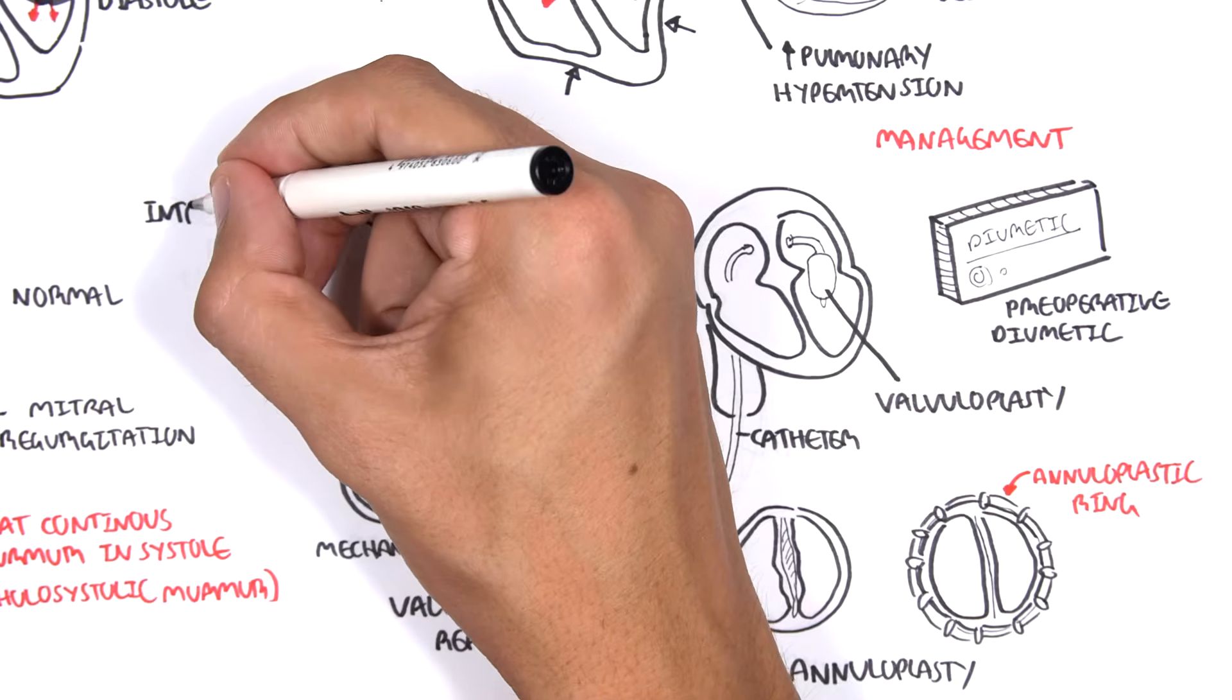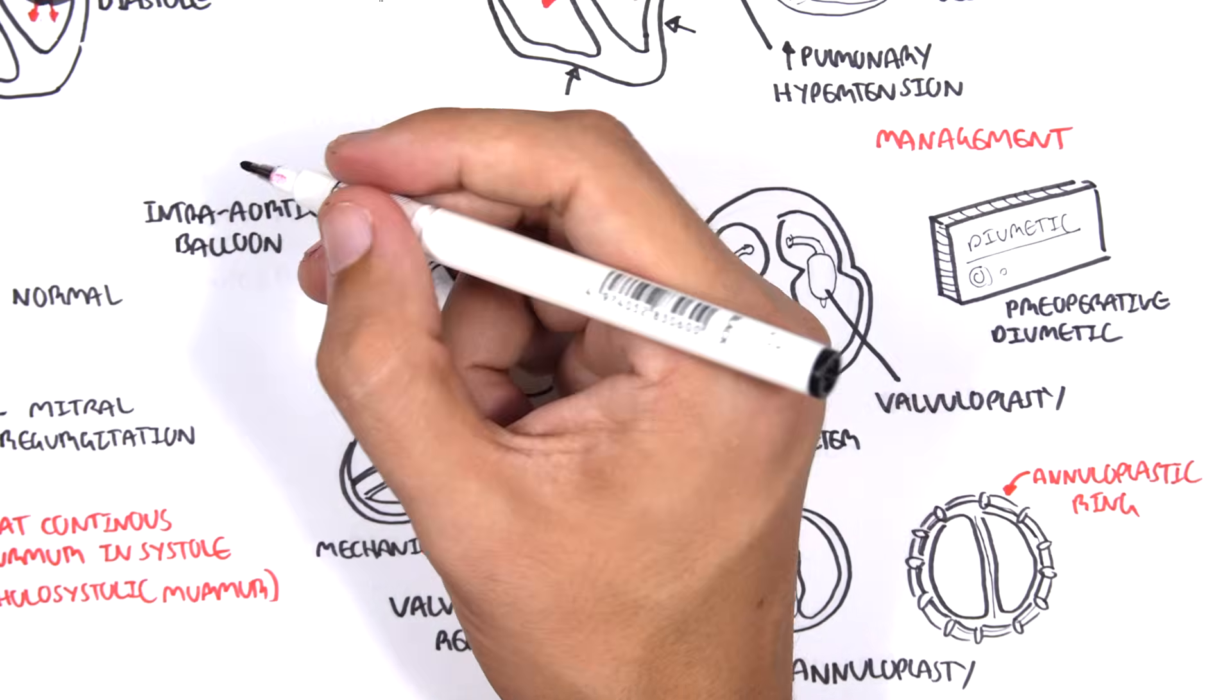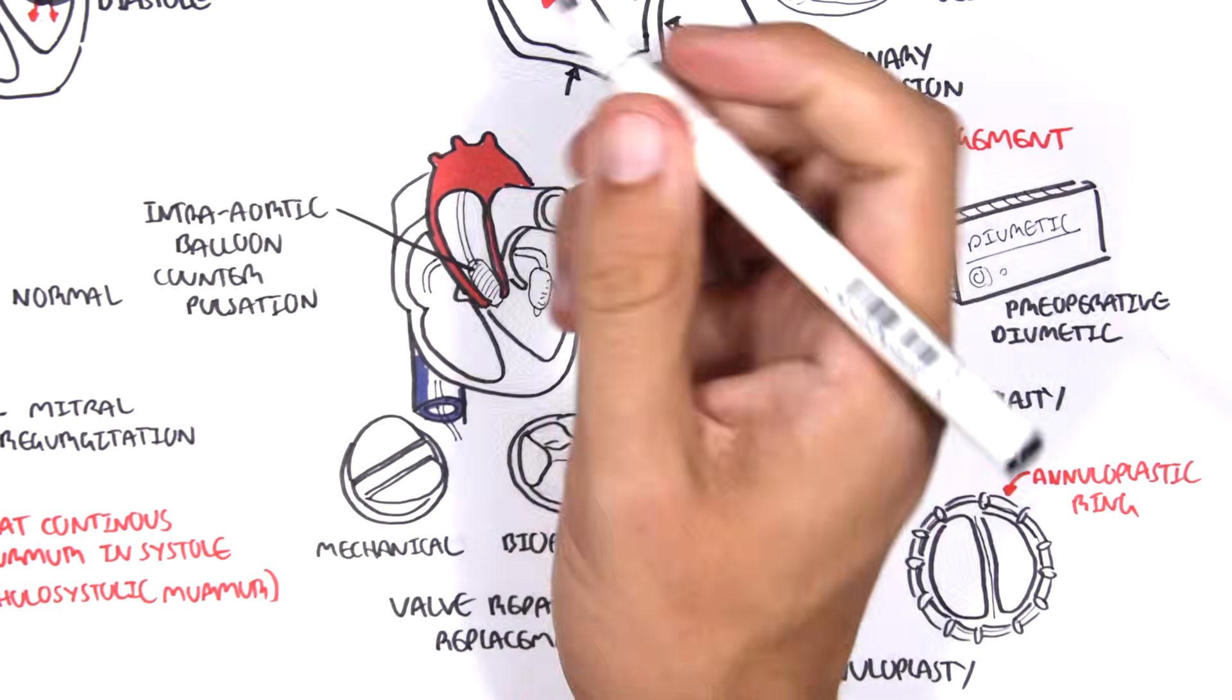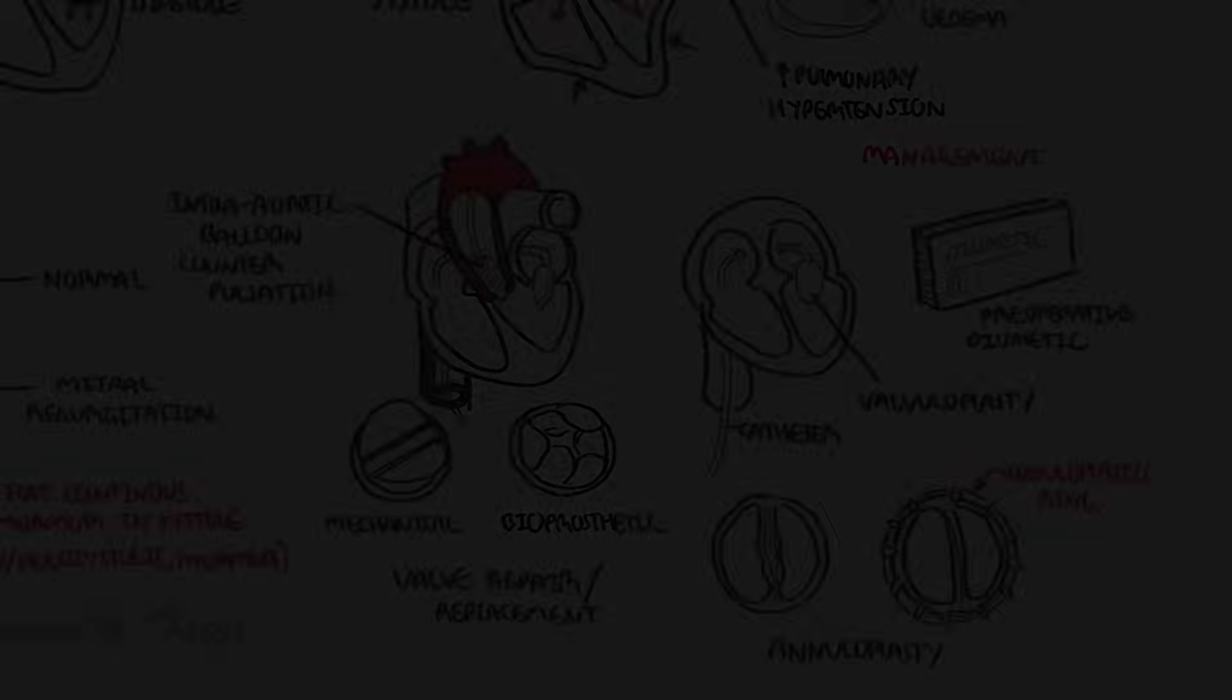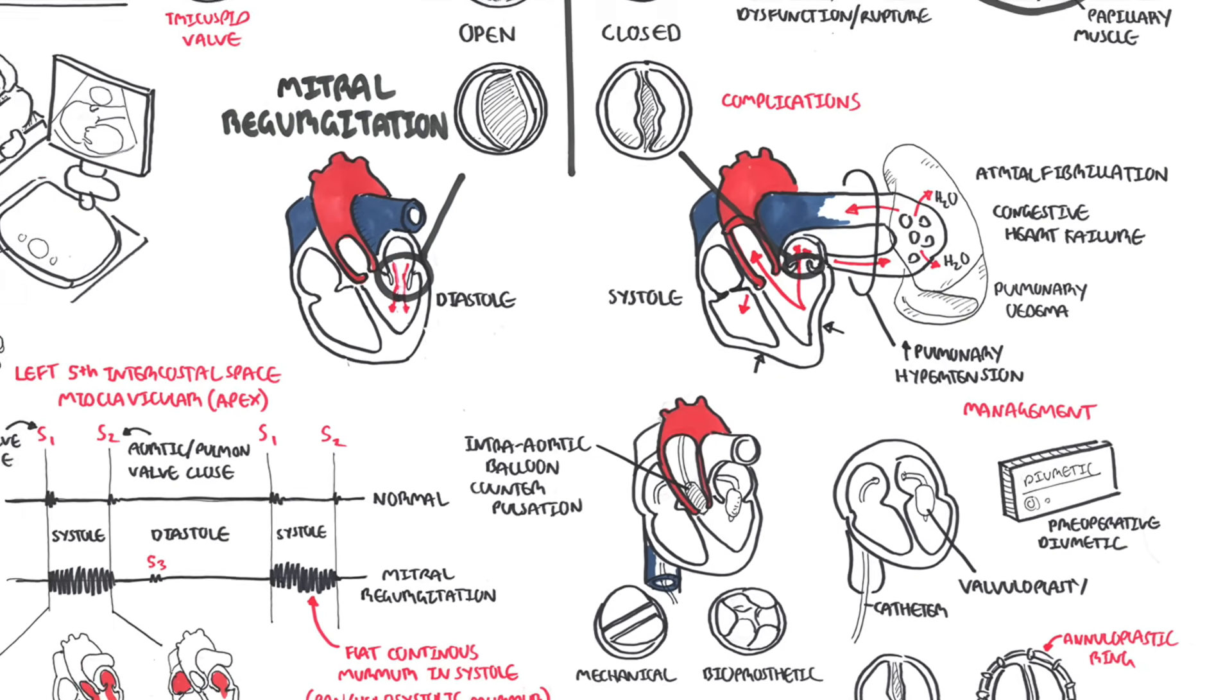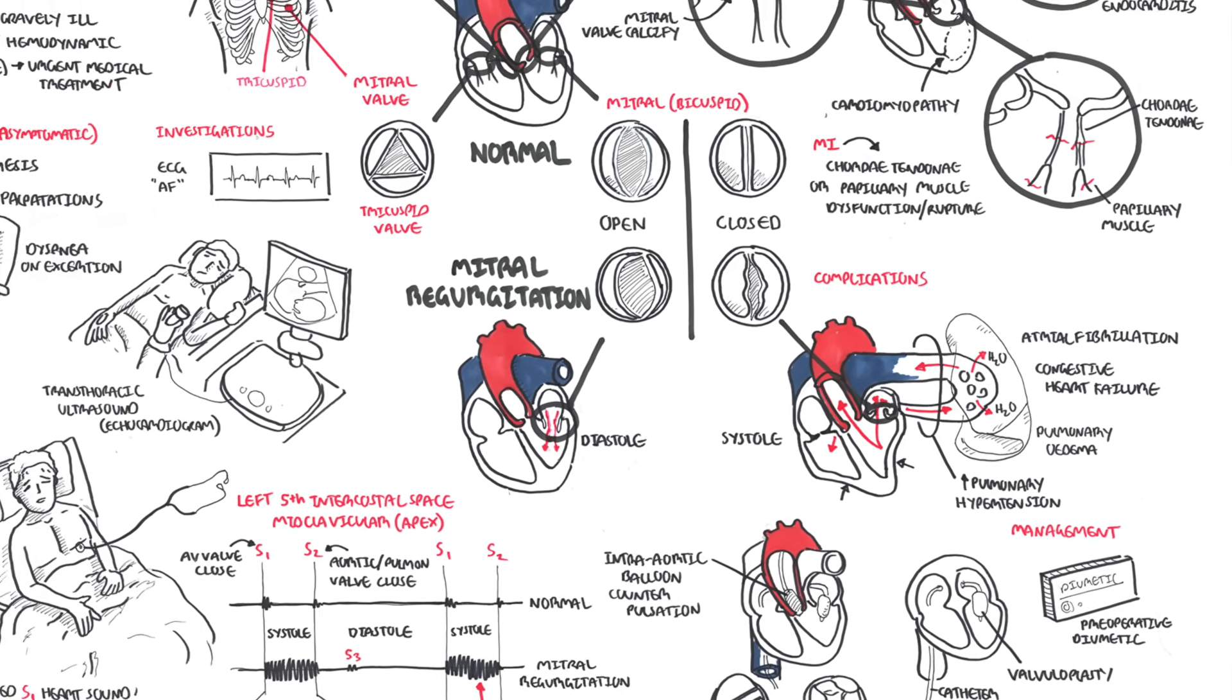Finally, an intra-aortic balloon counterpulsation procedure can also be performed, which promotes more blood flow through the aorta rather than back to the left atria where it should not go. This is only a temporary solution.